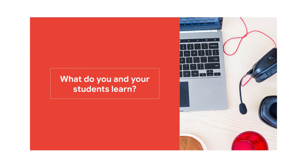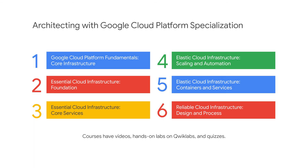The Architecting with Google Cloud Platform specialization on Coursera comprises six courses. This specialization introduces learners to the comprehensive and flexible infrastructure and platform services provided by Google Cloud Platform. Through a combination of presentations, demos, and hands-on labs, learners explore and deploy solution elements.